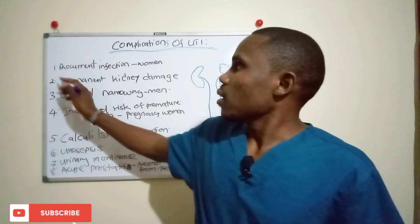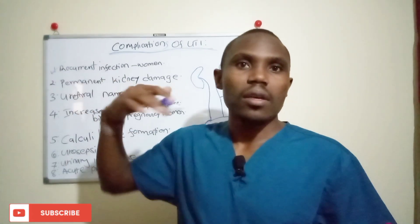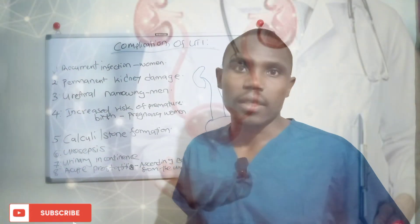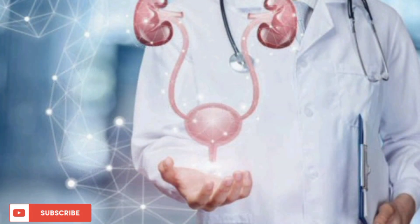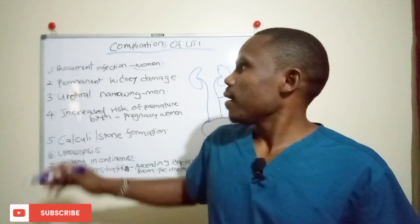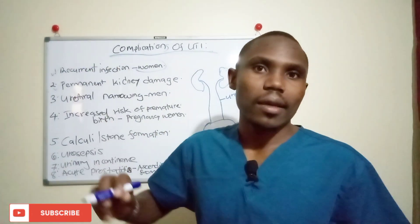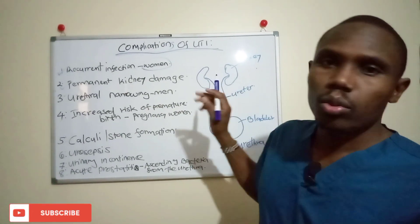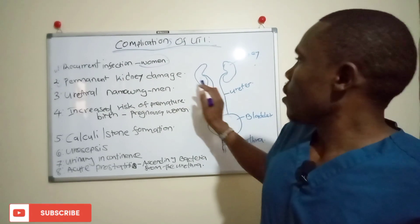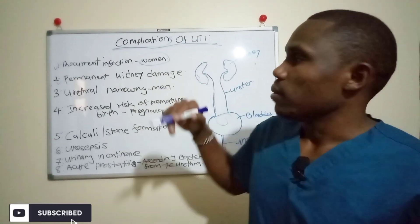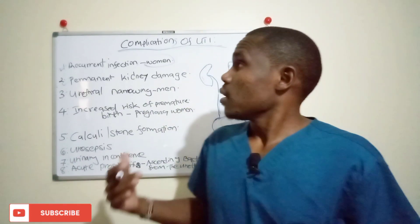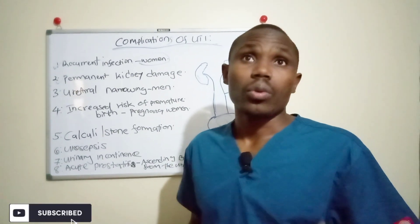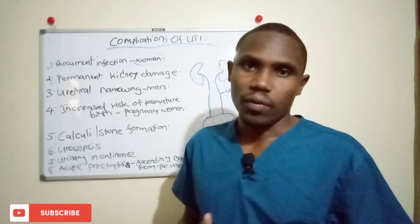The first complication is recurrent infections. If a UTI goes untreated, it may cause recurrent UTIs, especially in women because of the shorter urethra. Another complication is permanent kidney damage, caused by bacteria ascending from the urethra up to the bladder and then to the kidneys. This is why you need to seek treatment as soon as you have these signs and symptoms.